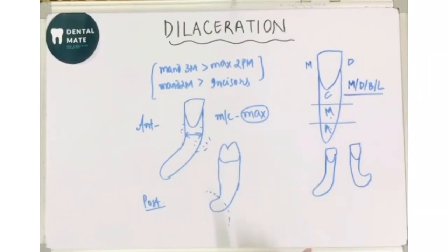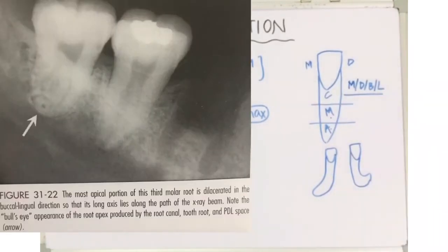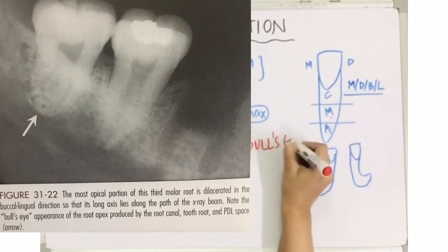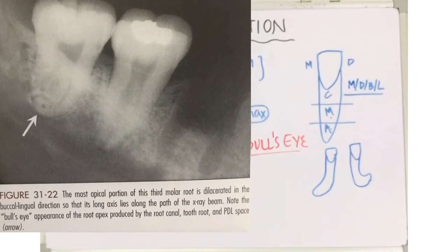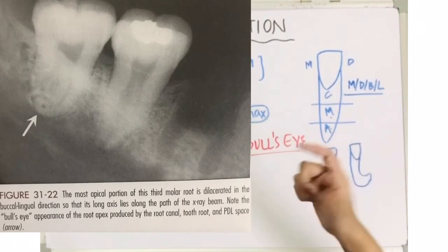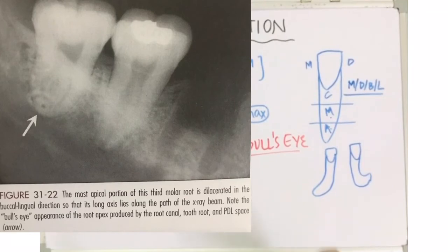Next, one important thing which I have asked you is the bull's eye appearance. When is the bull's eye appearance seen in dilaceration? Now see, we have seen the mesial and the distal aspect of the tooth, my mesial bend or distal bend. Now if there is buccal or lingual angulation or curvature of the tooth, then what happens is if we have a normal IOP, then in that there is an appearance of a circular radiopaque area.